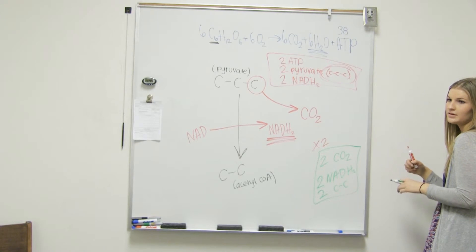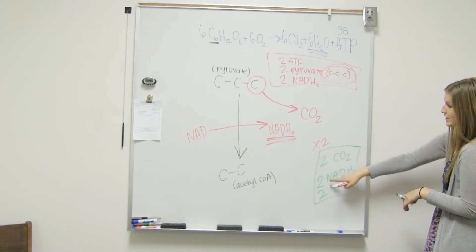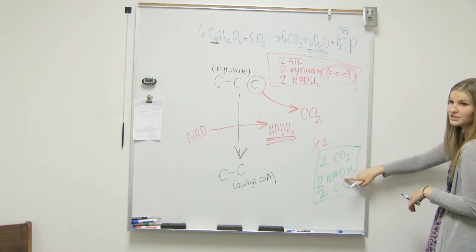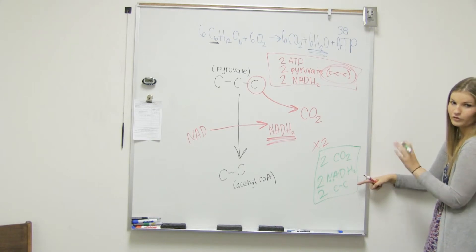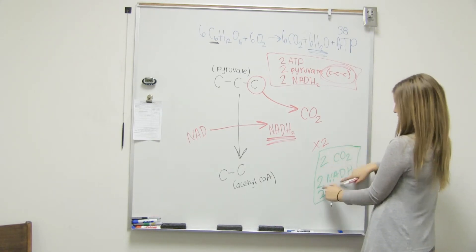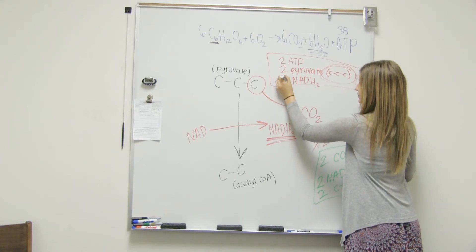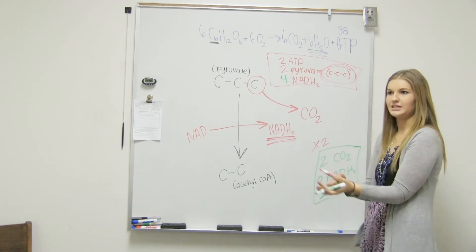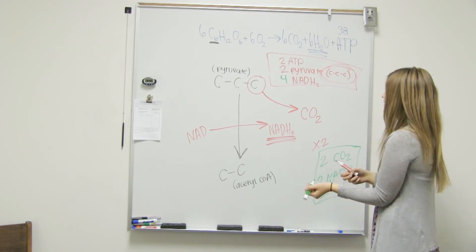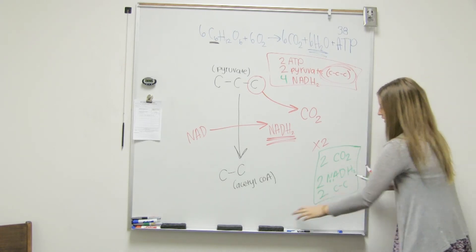No, not in this step. So we can add our two NADH, kind of keep a running tally of overall. So let's go up here and add two plus two and we'll make this a four. Because we want to see what we're bringing into the electron transport chain. So we got that.